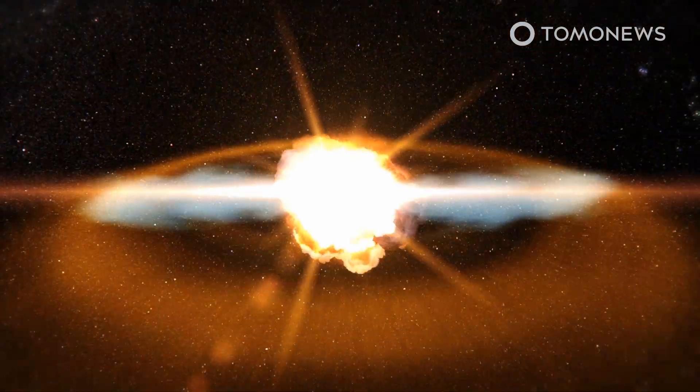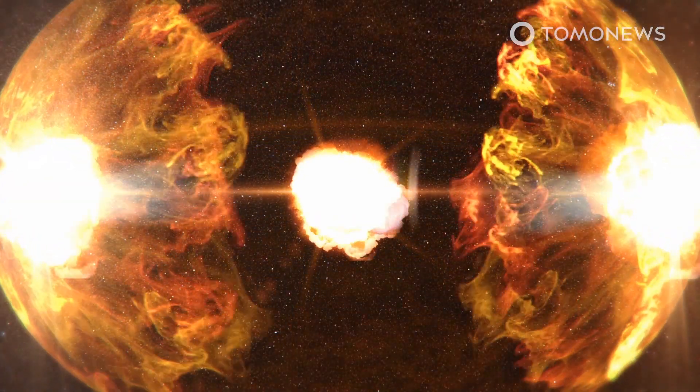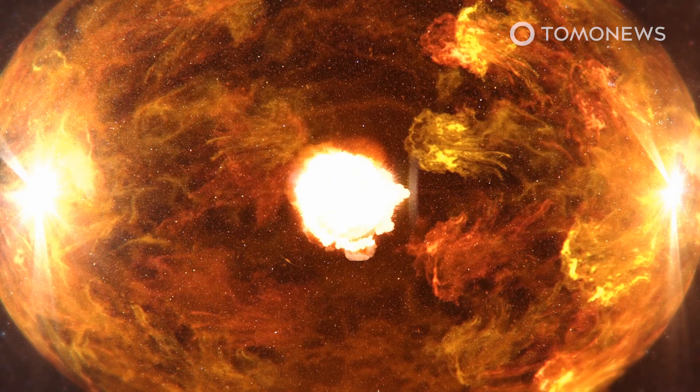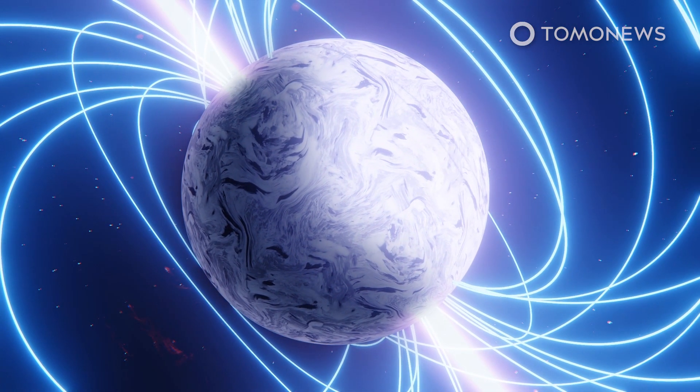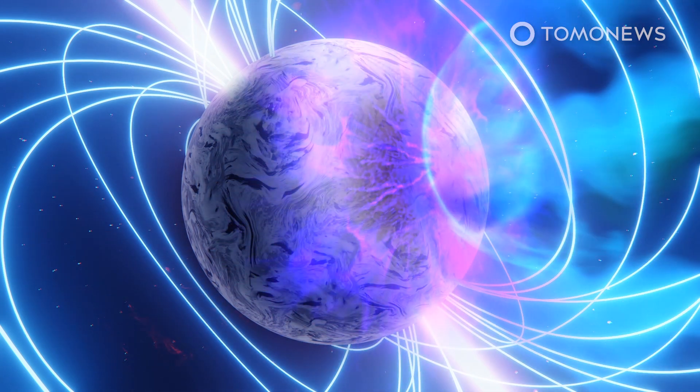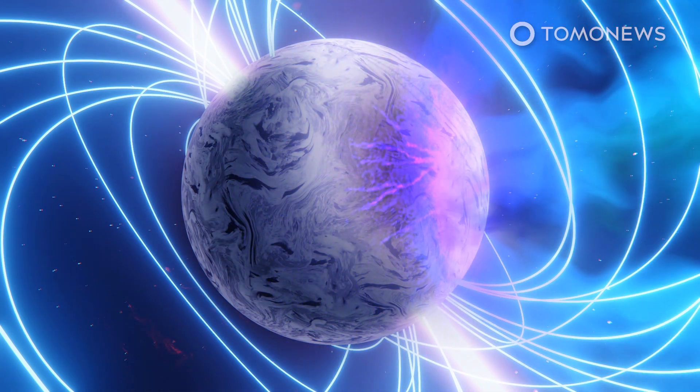when a star runs out of nuclear fuel and can no longer support itself against the inward pull of gravity. Not only is it a neutron star, but it's a rare kind of neutron star known as a magnetar, the most powerful magnetic objects in the universe.